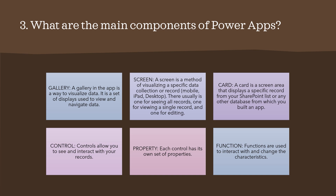What is a screen? A screen is a method of visualizing a specific data collection or record — it could be a mobile, iPad, or desktop view. There is usually one screen for seeing all records, one for viewing a single record, and one for editing. A card is a screen area that displays a specific record from your SharePoint list or any database from which we built an app.